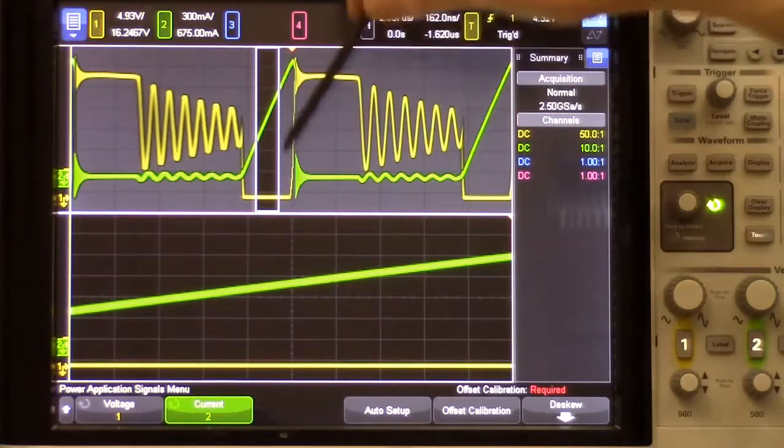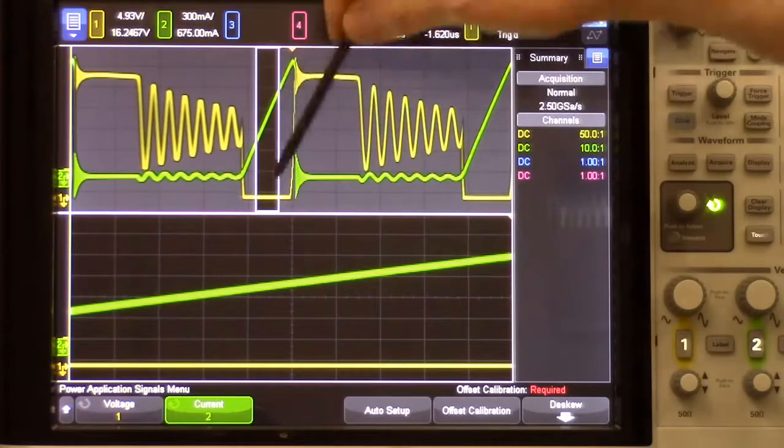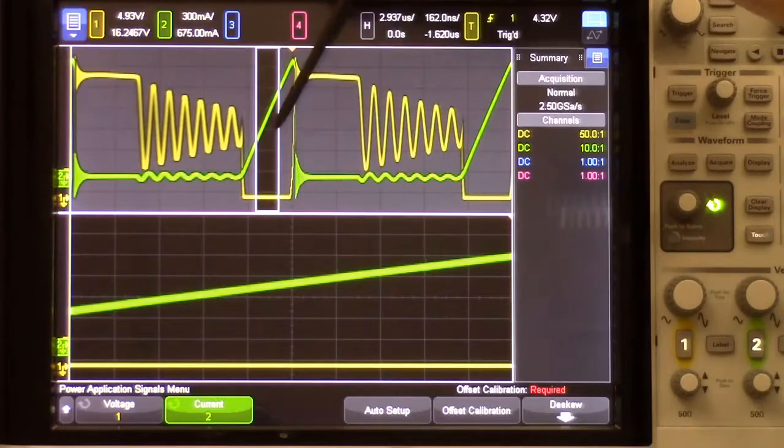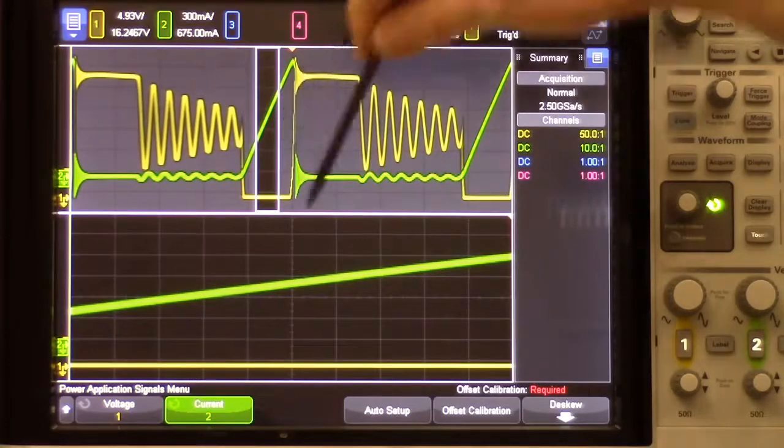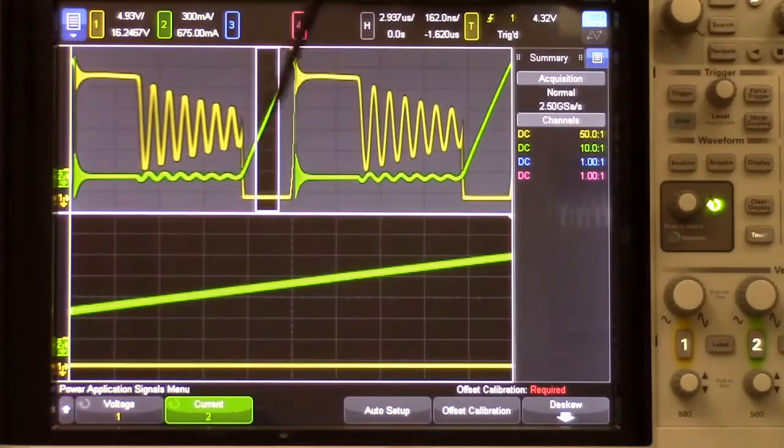And then it zooms in to the center 50% portion of the conduction phase. This is where we're going to measure RDS-ON or VCE if we happen to have a bipolar transistor. And this is the zoom time base window that's expanded in this part.